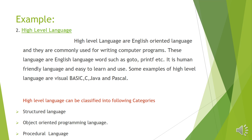High level language is an English oriented language. It is user friendly because it is easily understandable by the user, but difficult for the computer system. High level language consists of different English words, for example: scanner, go to, print, tab, and so on.